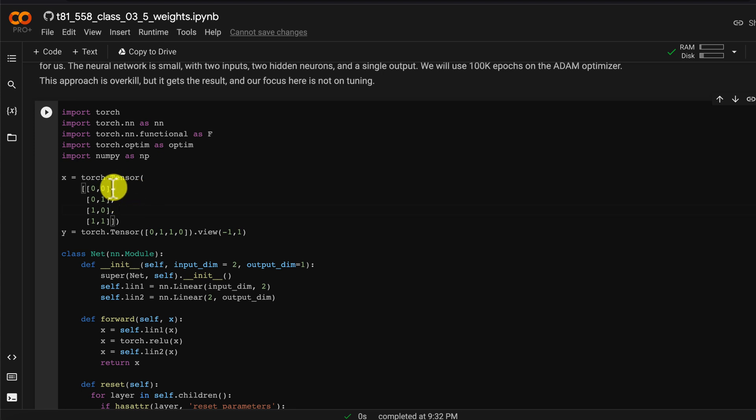So you can see the truth table somewhat encoded here. Zero zero, they're the same so that's false. These two in the middle are different so they're true and the one at the end is the same so that is also false.